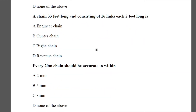Question 11: A chain 33 feet long consisting of 16 links each 2 feet long is — Option A: engineer chain, Option B: Gunter chain, Option C: Bigot chain, Option D: revenue chain. The answer is D — revenue chain.